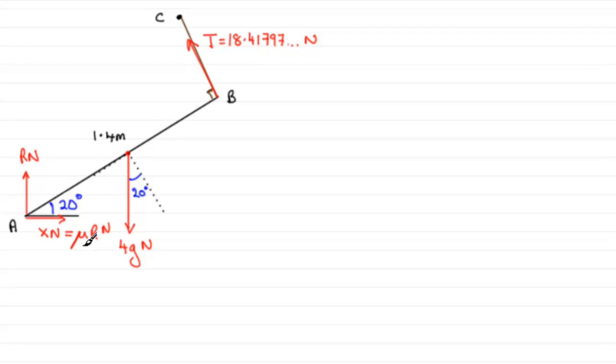And to do that what we need to do is first of all find out what R is by resolving vertically. Then we're going to resolve horizontally. And from our equation we should be able to solve for mu.